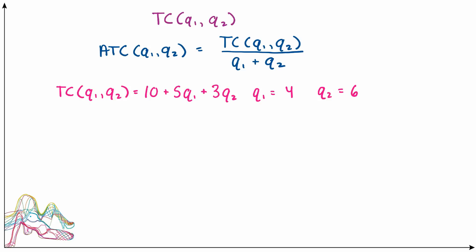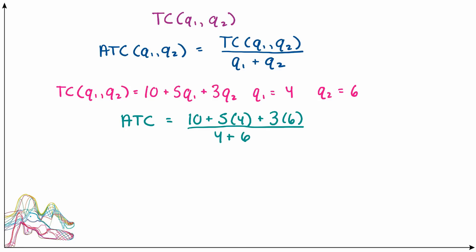We can calculate average total cost by plugging everything in. Average total cost equals the total cost — which is 10 plus 5 times 4 plus 3 times 6 — divided by Q1 plus Q2, which is 4 plus 6. If we multiply that all out, we get 48 over 10, or an average total cost of 4.8.